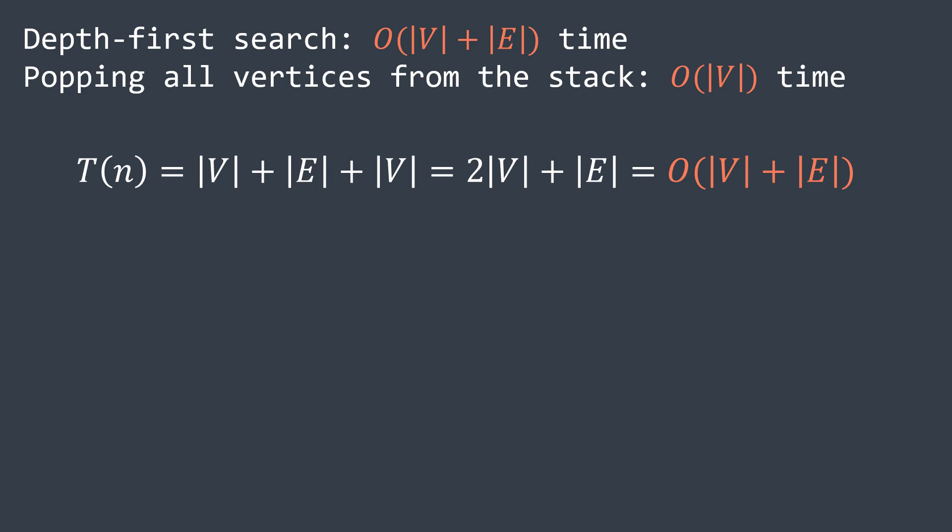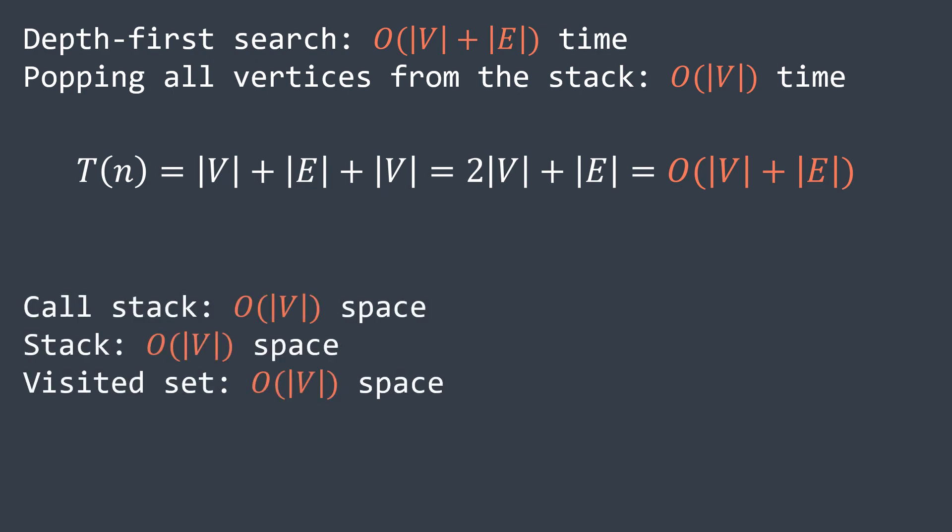And for the space complexity, we need |V| extra space for the call stack, |V| for the stack, and |V| for the visited set. We get a space complexity of O(|V|).